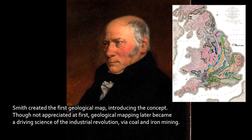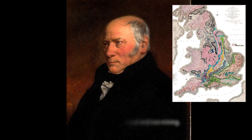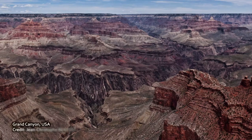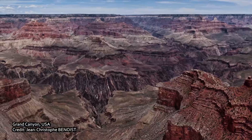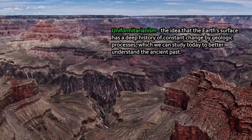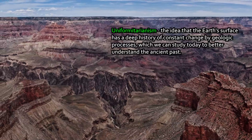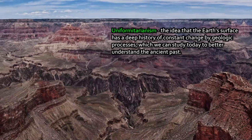His first geologic map of England remains today fairly accurate. He introduced the concept of geologic mapping, which at first wasn't widely appreciated and he never got rich off of it. But later it became quite valuable — not just for digging canals, but for looking for certain strata of rock that you know will lead you to a seam of coal. That's how the Industrial Revolution got going, along with iron mining. So Hutton's and Smith's contributions reinforced this idea of uniformitarianism — that the Earth's surface has a deep history, and if you study the layers of sediment or the types of rock you find, you can understand that deep history.